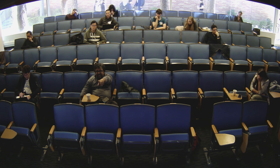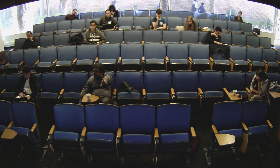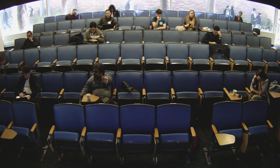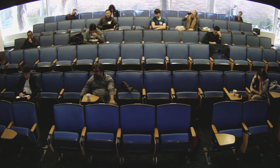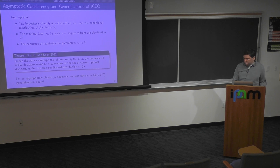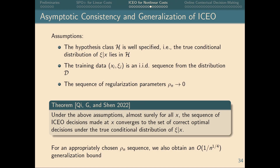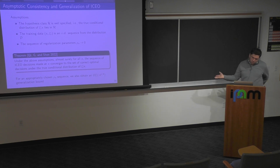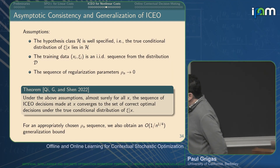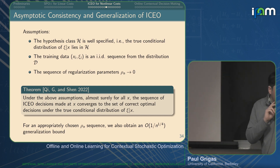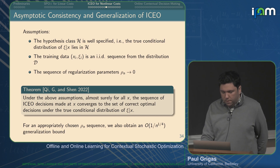Regarding choice of regularization — if S is a simplex, you would use entropy (a Bregman divergence) rather than L2, and the generalization bound will have a constant depending on that Bregman distance, so the simplex case is more favorable with entropy. For an appropriately chosen ρ sequence, we obtain a generalization bound. The bound may not be the best — the rate is not quite 1/√n because of some bias introduced by the decision regularization — and we're still unsure if it's tight.